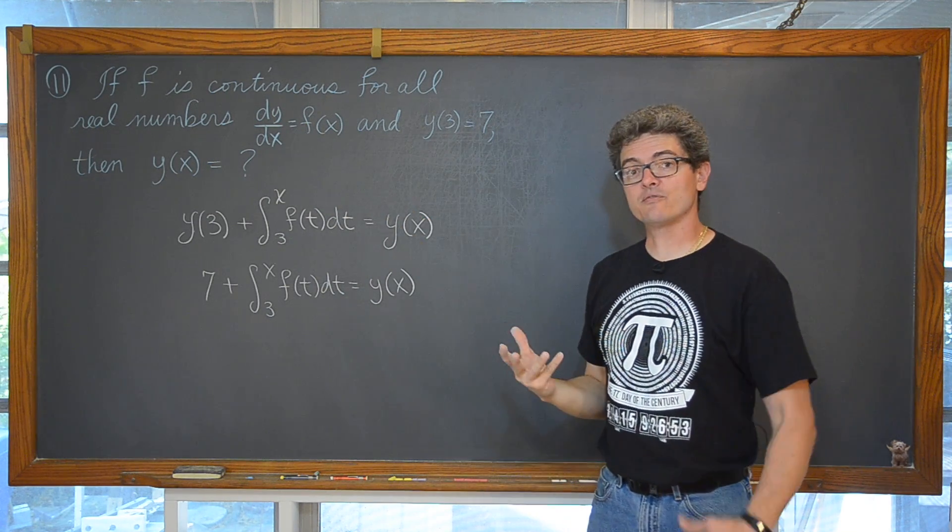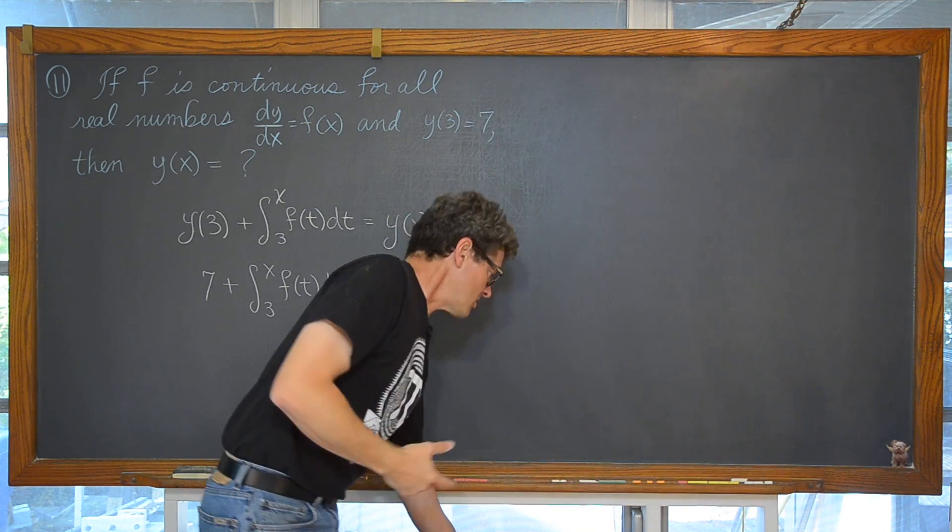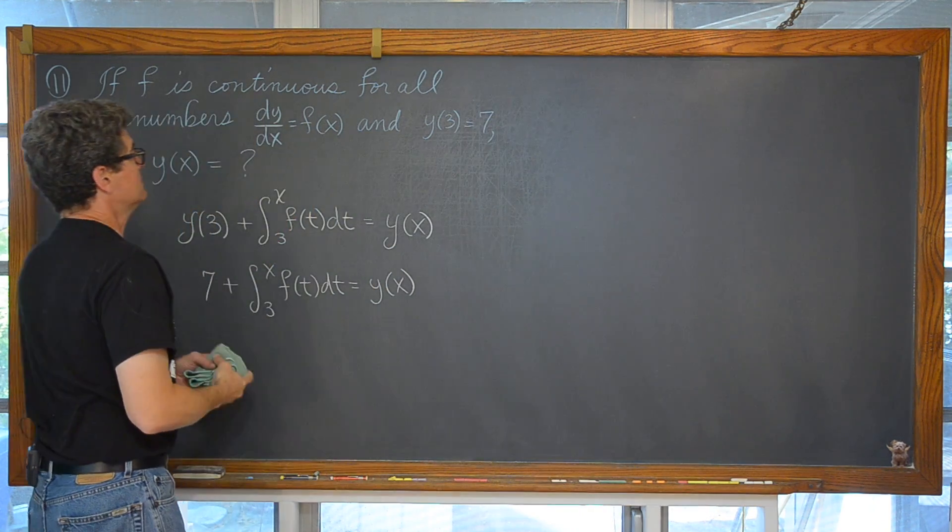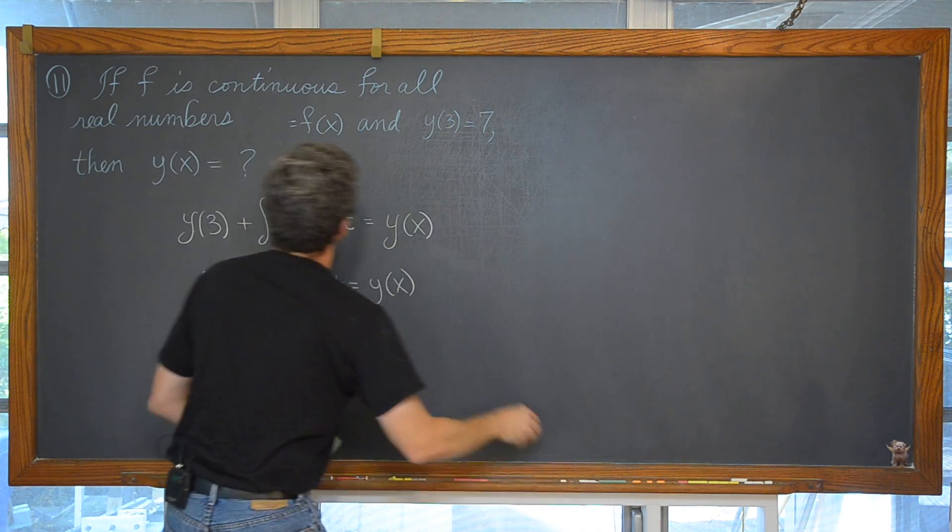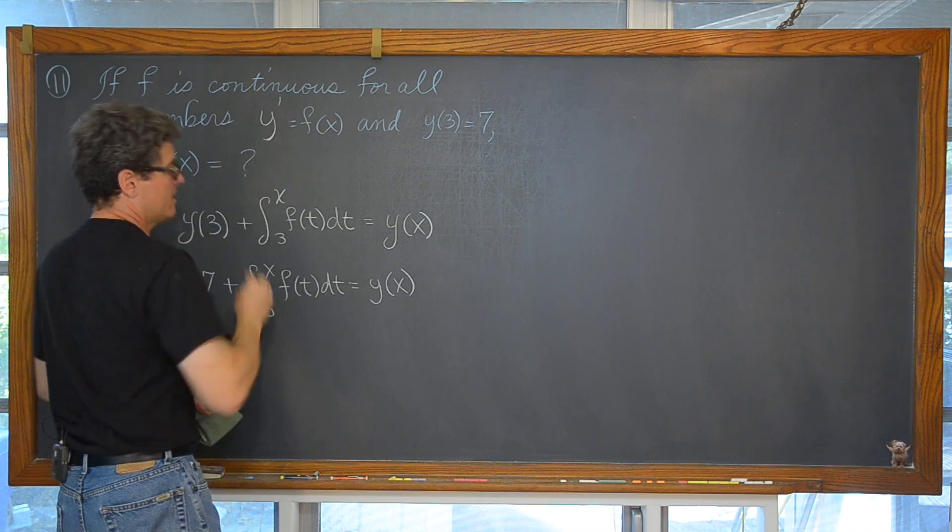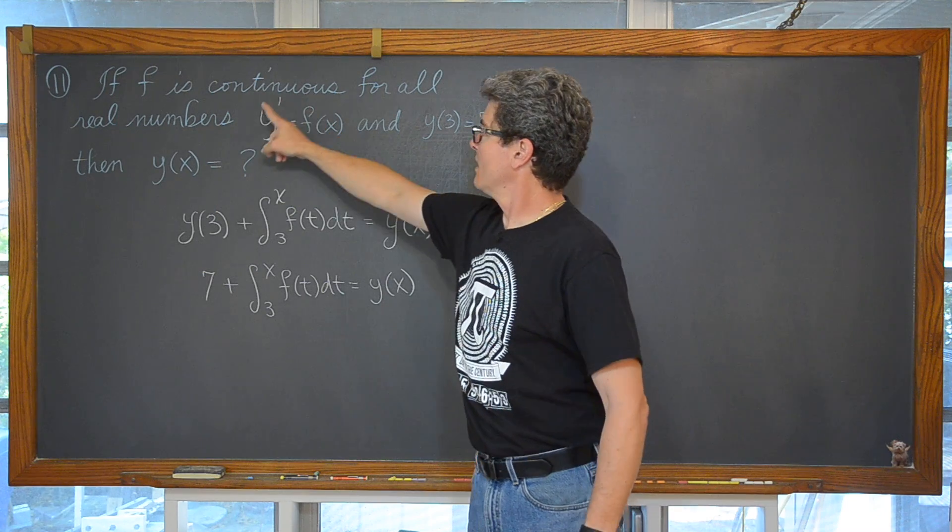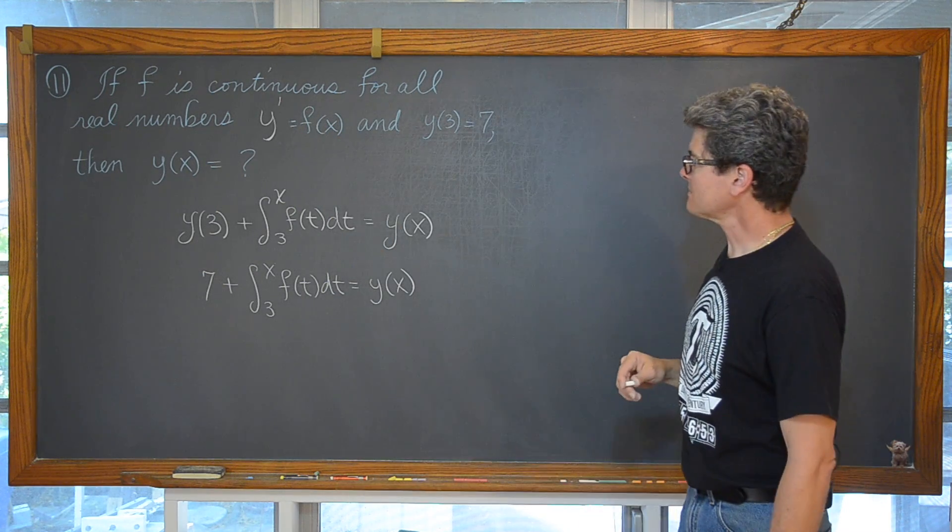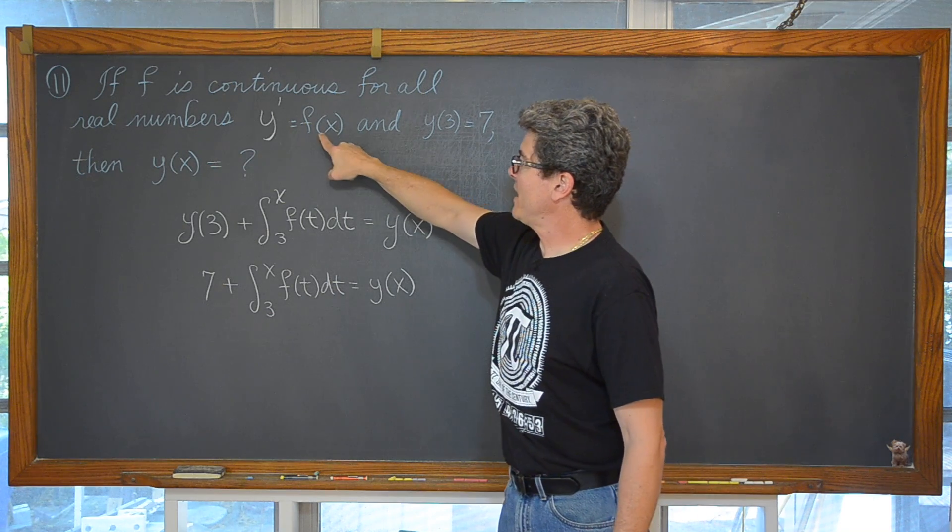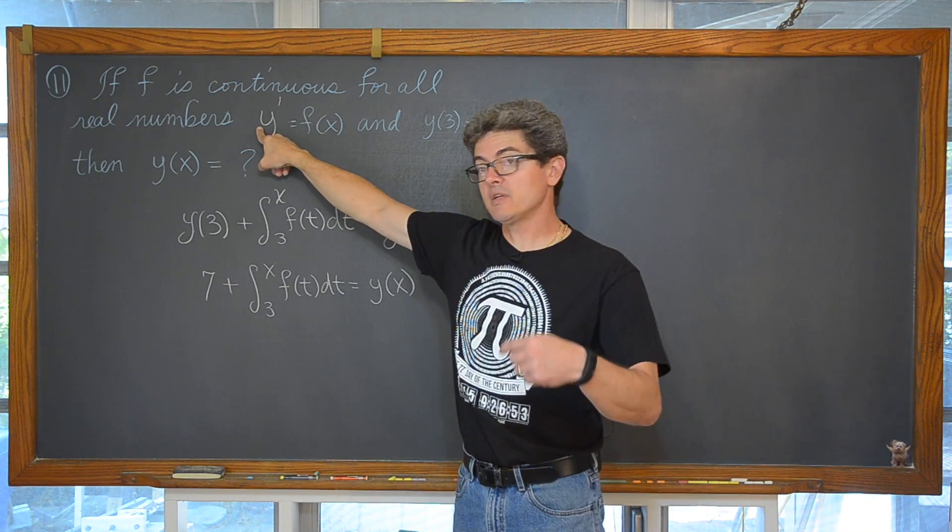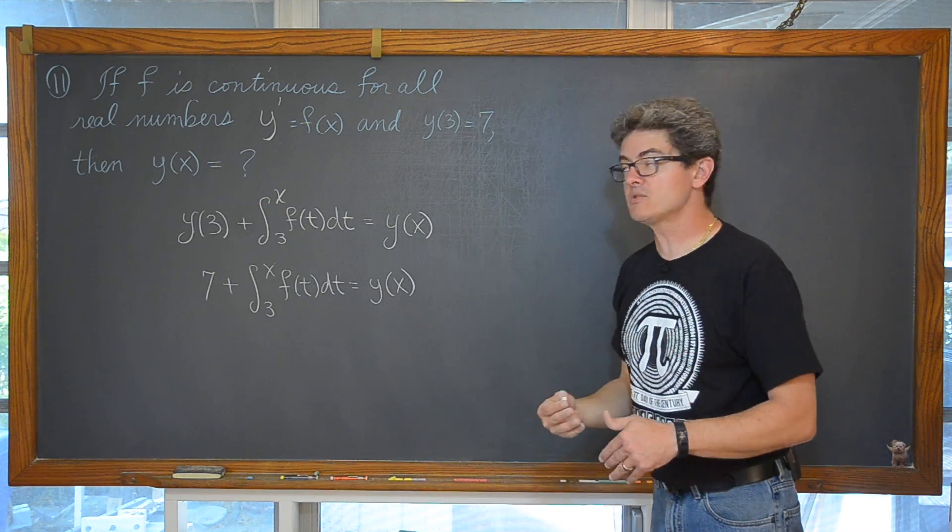dy dx is another sort of fancy notation. dy dx is a slightly longer version of me just saying, hey dy dx means that that is another way of writing y prime. So f is the derivative of y prime. Then what is y? Well, if f is the derivative of y and I want to find information out about y, I am going to need to integrate.